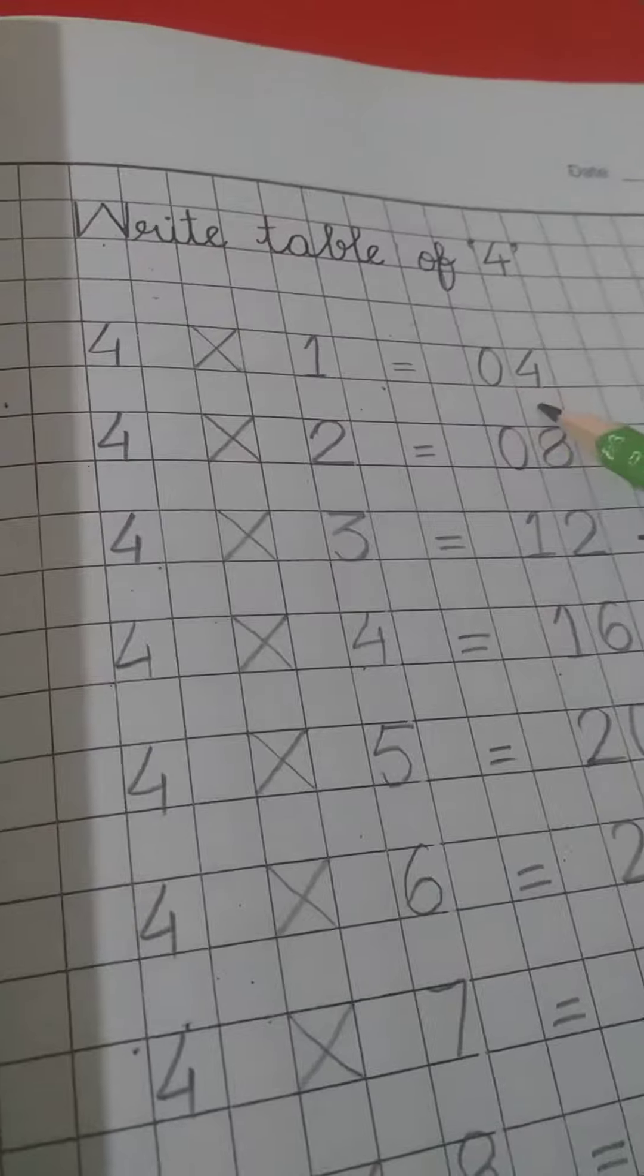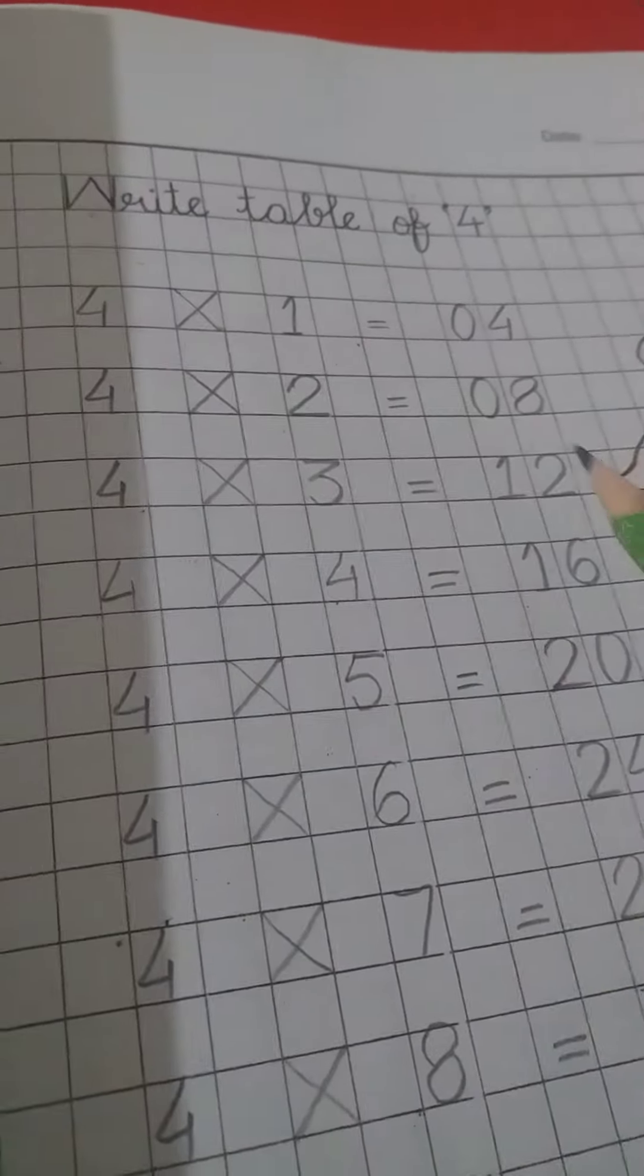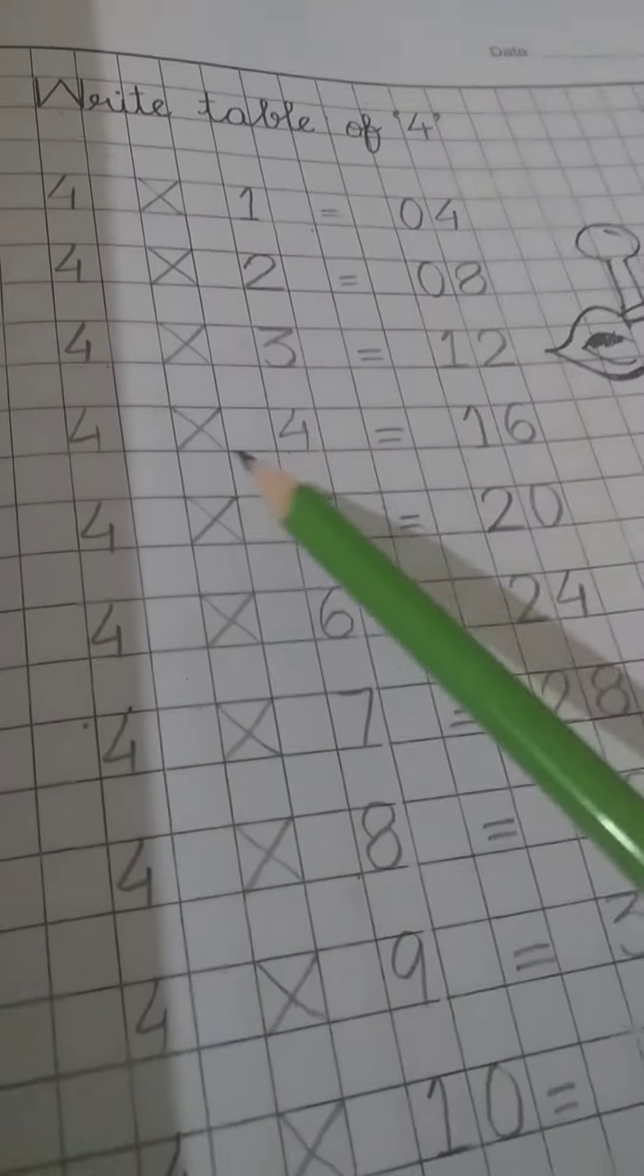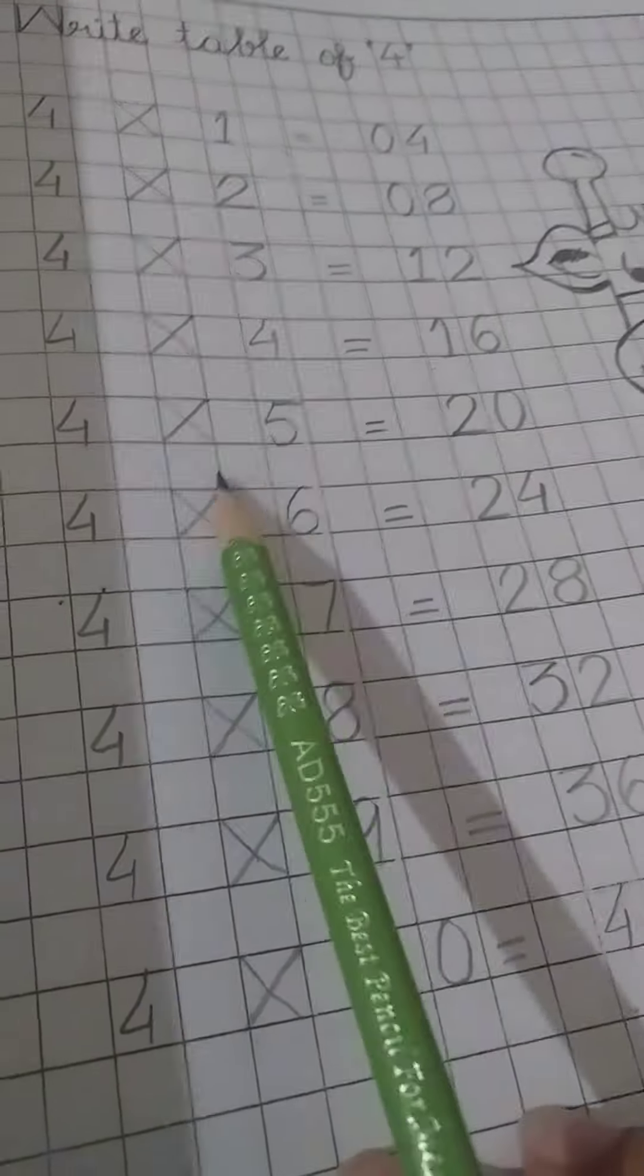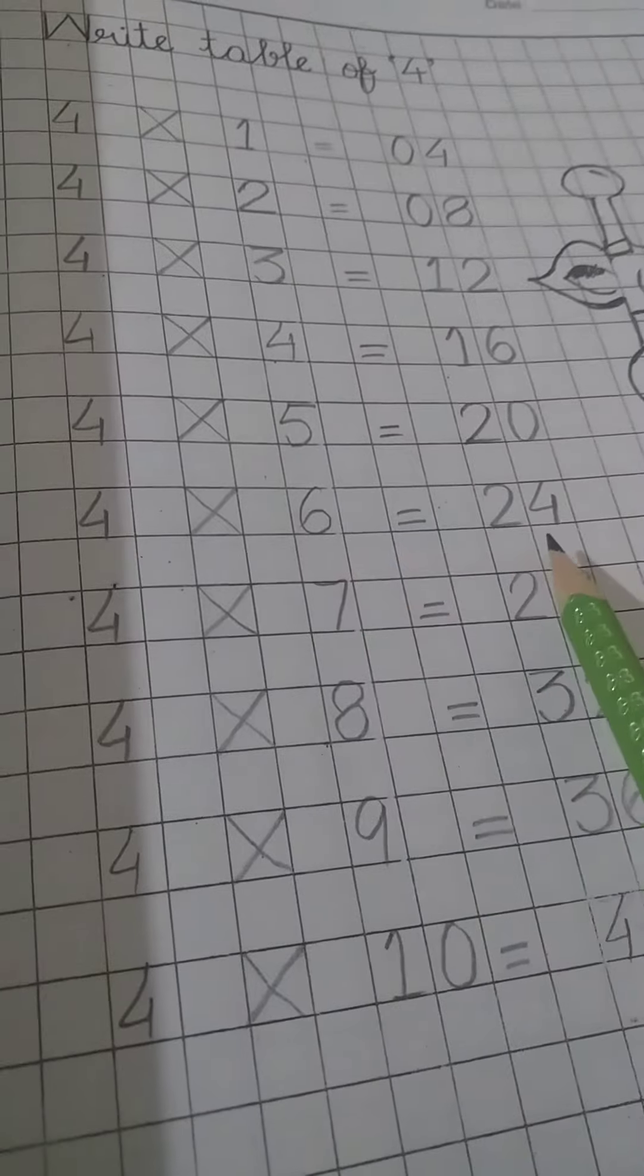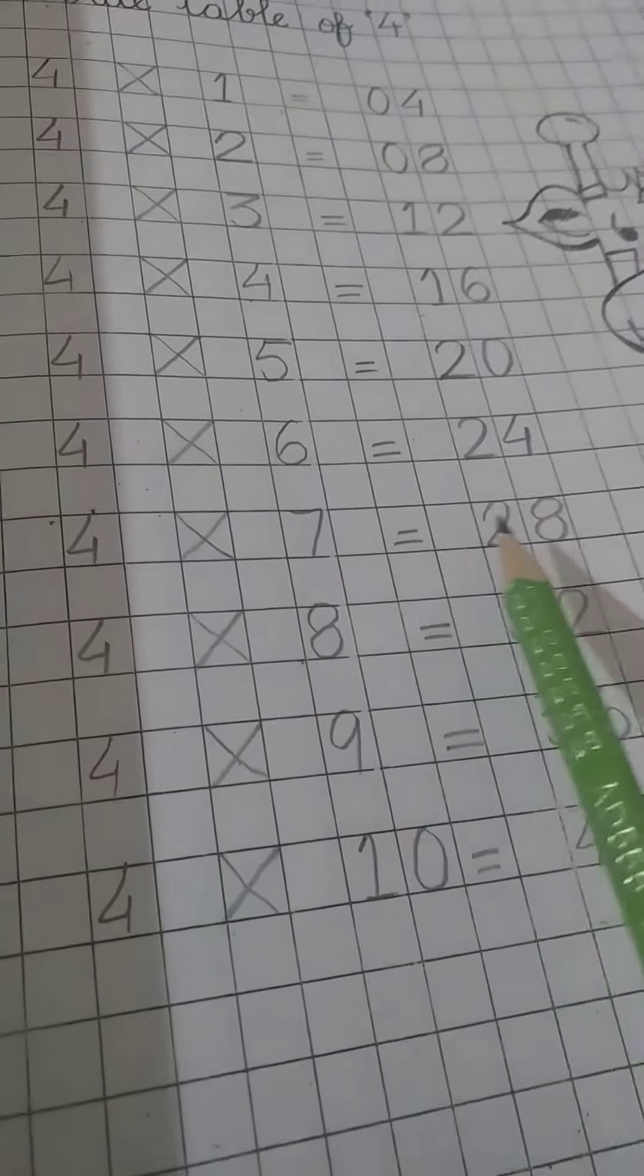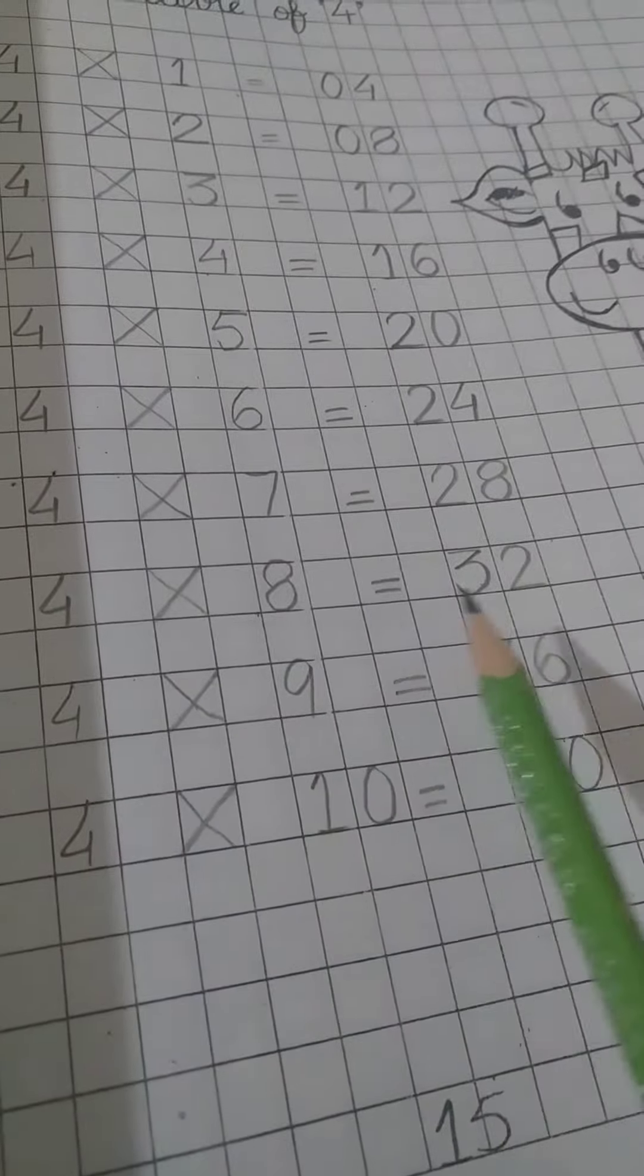4 times 1 is 4. 4 times 2 is 8. 4 times 3 is 12. 4 times 4 is 16. 4 times 5 is 20. 4 times 6 is 24. 4 times 7 is 28. 4 times 8 is 32. 4 times 9 is 36. 4 times 10 is 40.